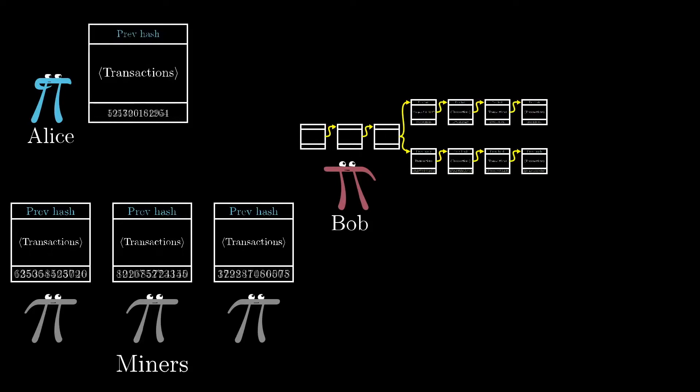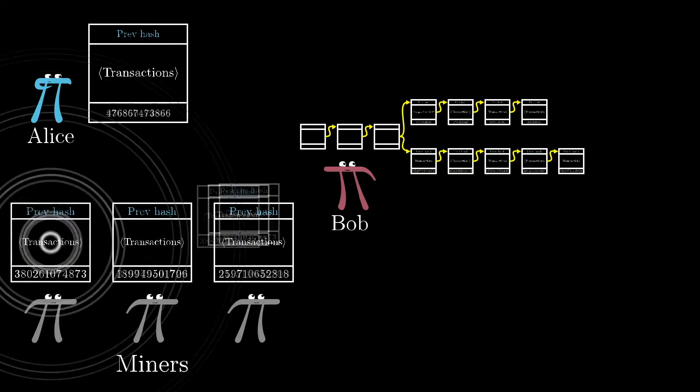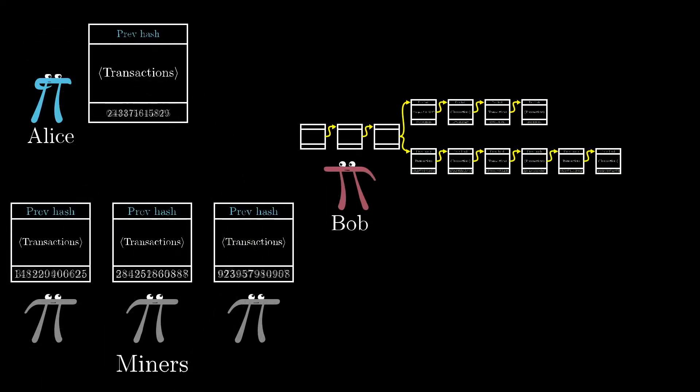But unless she has close to 50% of the computing resources among all of the miners, the probability becomes overwhelming that the blockchain that all of the other miners are working on grows faster than the single fraudulent blockchain that Alice is feeding to Bob.